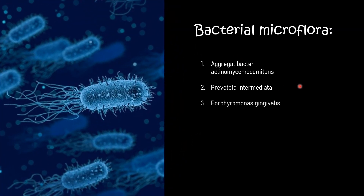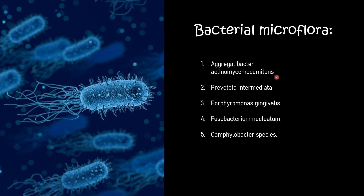The major bacteria involved in NUP are: Aggregatibacter actinomycetemcomitans, Prevotella intermedia, Porphyromonas gingivalis, Fusobacterium nucleatum, and Campylobacter species. All of these bacteria form a microbial colony where they thrive, form plaque aggregation, and cause periodontitis.